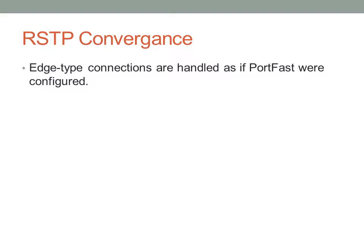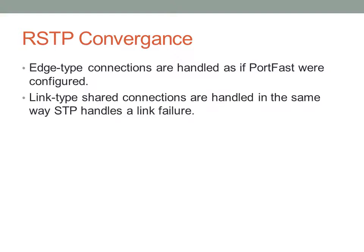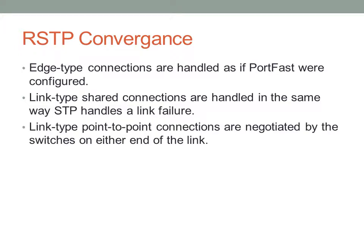For Rapid SpanningTree convergence: edge type connections are handled as if PortFast is configured — the edge type and PortFast amount to the same thing. Shared link type connections are handled similarly to how regular SpanningTree handles a link failure, but with reduced timers. Point-to-point connections are actively negotiated — switches talk to each other, determine that a topology change has occurred, and negotiate a better designated port. There is a good example of Rapid SpanningTree convergence in the text that covers this auto-negotiation in detail.